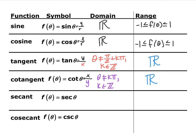So we write that theta cannot equal pi over 2 plus any integer multiple of pi, where k is an integer. That includes 3pi over 2 and negative 3pi over 2 — all positions at the top or bottom of the unit circle. Similarly, cotangent is x over y, so you can't have any angle that makes the y coordinate zero. Those are on the x axis, so the domain excludes any integer multiple of pi.